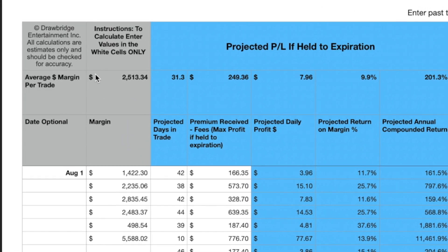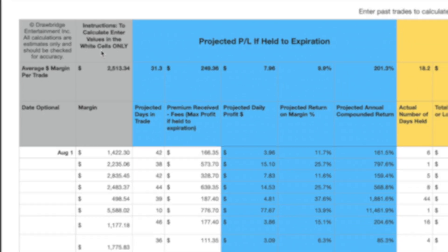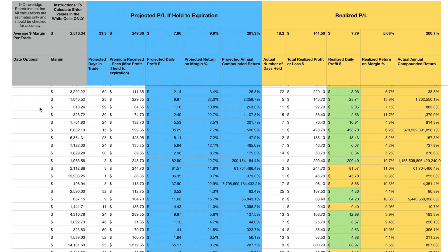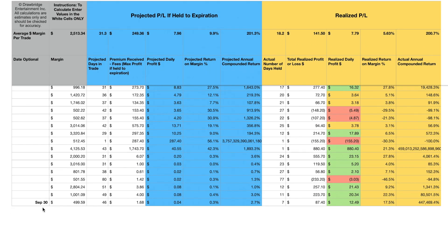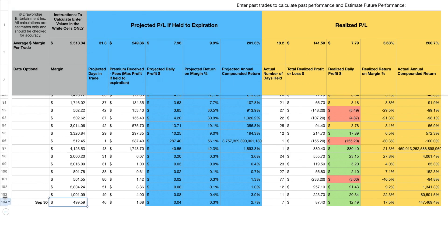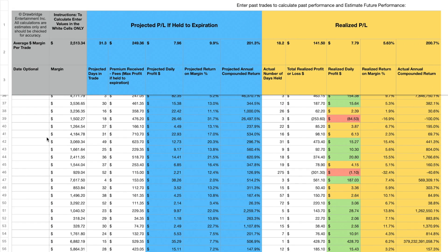I built this little spreadsheet and I've tried to keep it as simple as possible. The instructions are very simple — just enter in the white cells only; anything in a colored cell is going to be automatically populating. I've already got this one filled out, but these would be blank if you opened it up. I've put in transactions from August 1st going all the way down to September 30th — about 101 transactions.